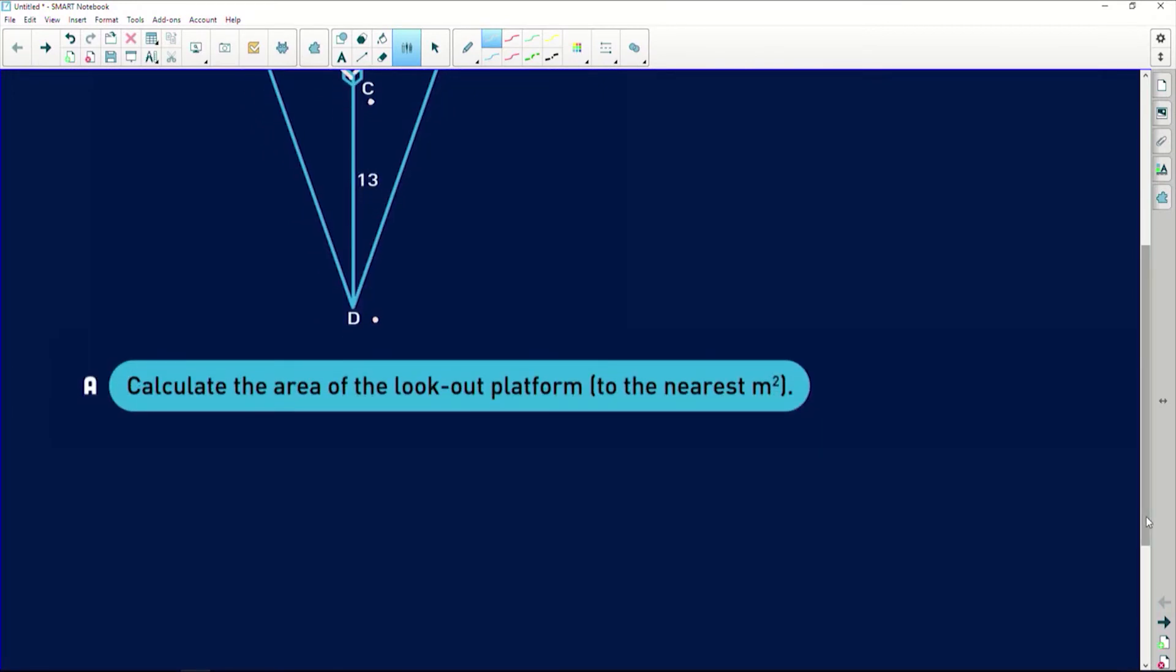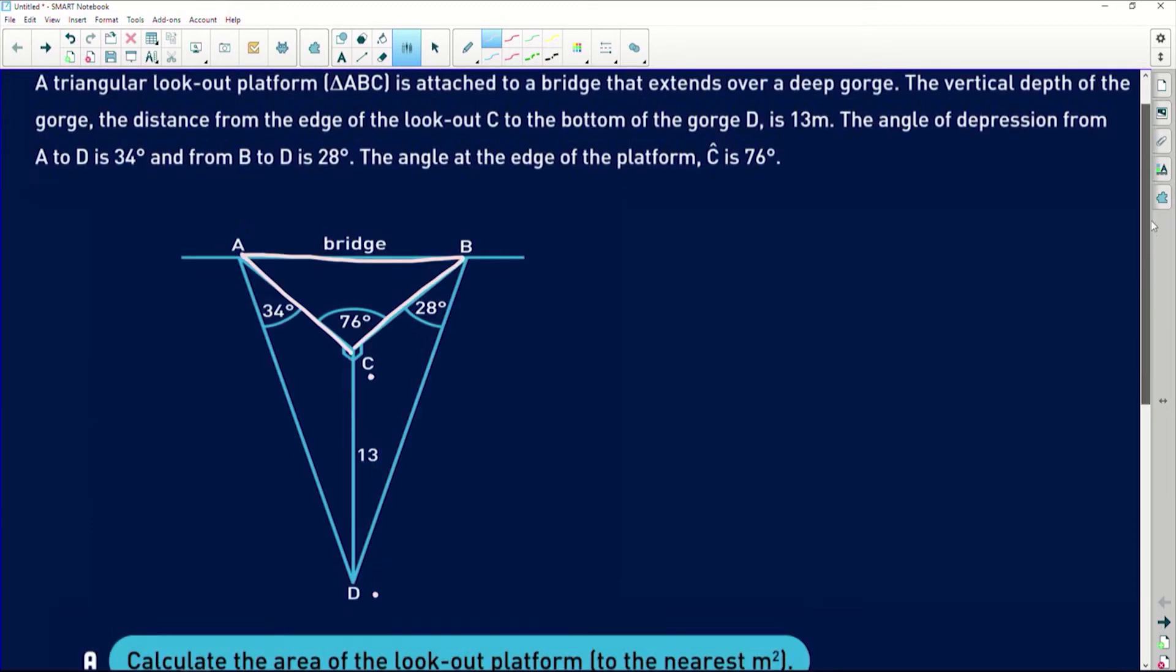Firstly, it says calculate the area of the lookout platform to the nearest meter squared. Okay, so this lookout platform here, we're dealing with triangle ABC. The only information we're given in this triangle is that 76 degrees. So I'm going to look at the triangles next door to try and solve for these missing edges.